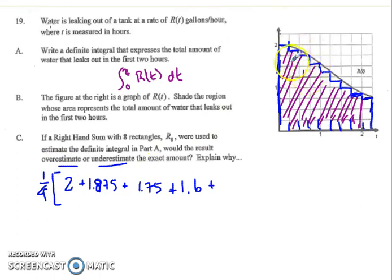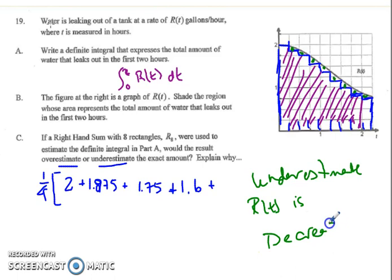And I think you could see here, because of these gaps, these are going to be underestimates because we're not including all of the area. So the answer is an underestimate, but the true reason why is because the function r of t is decreasing. And that's all you have to write to confirm.